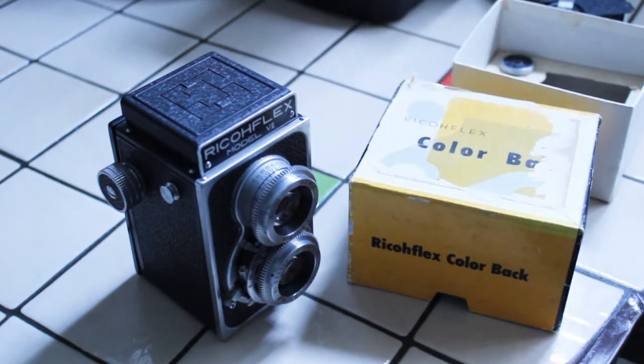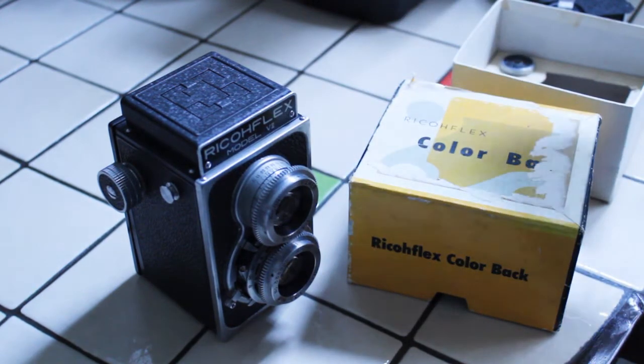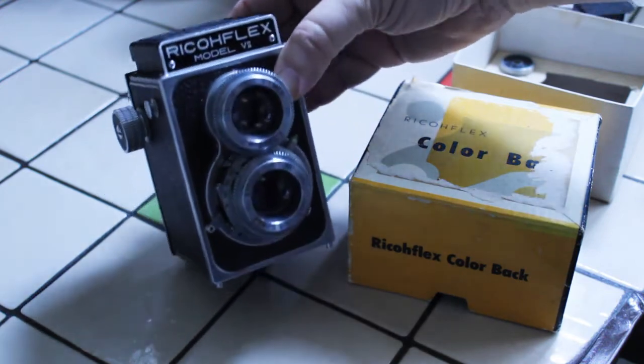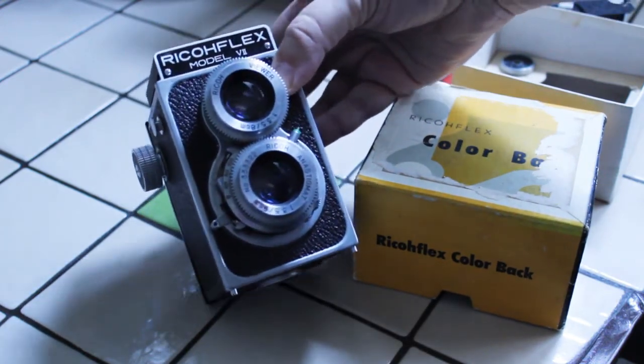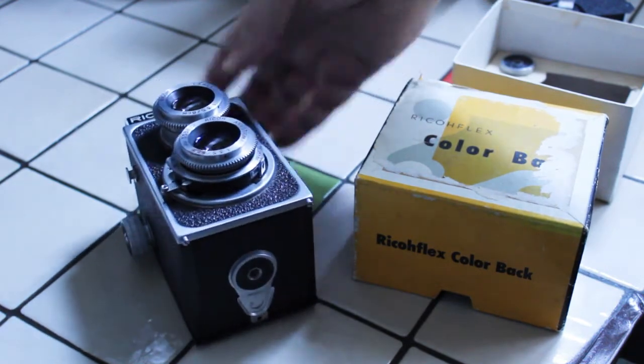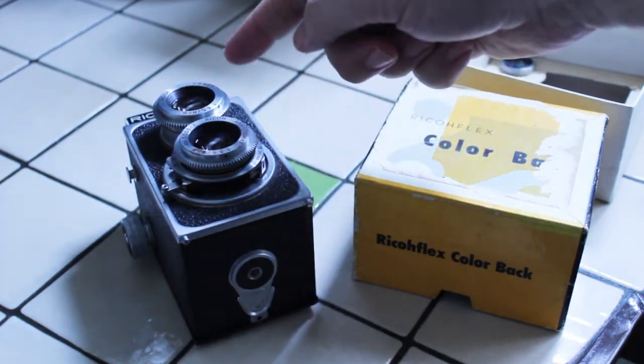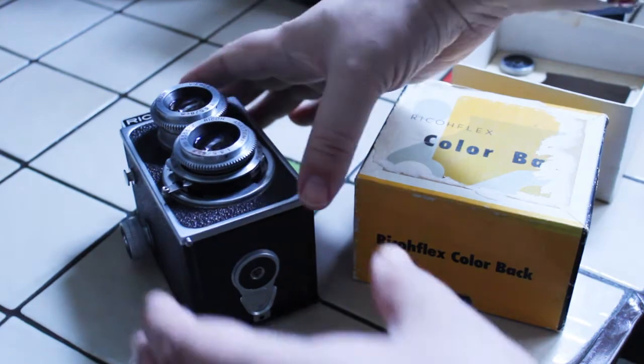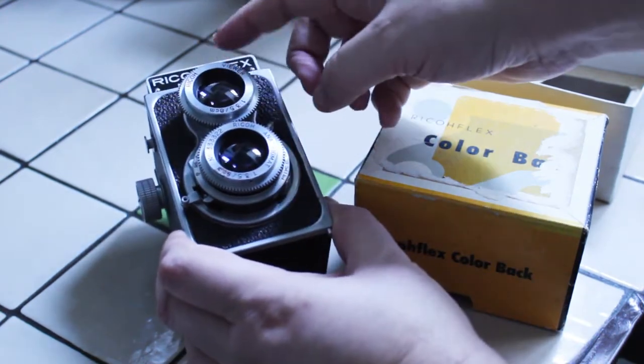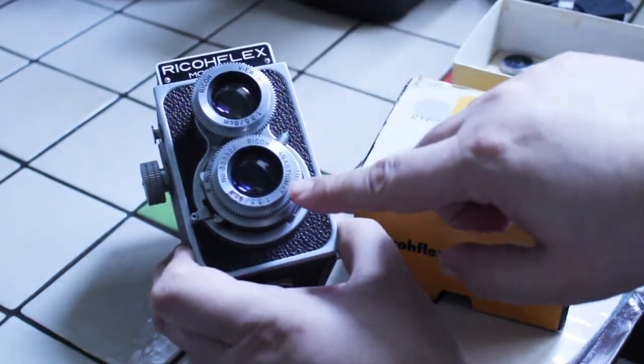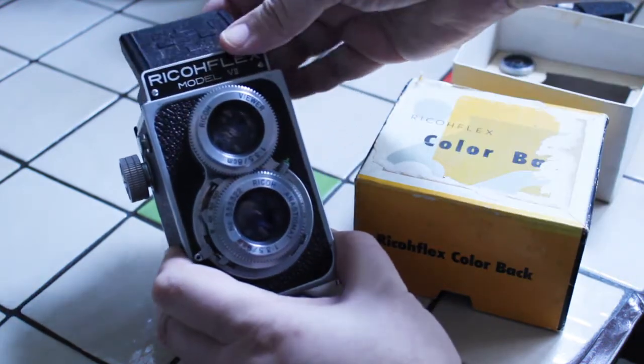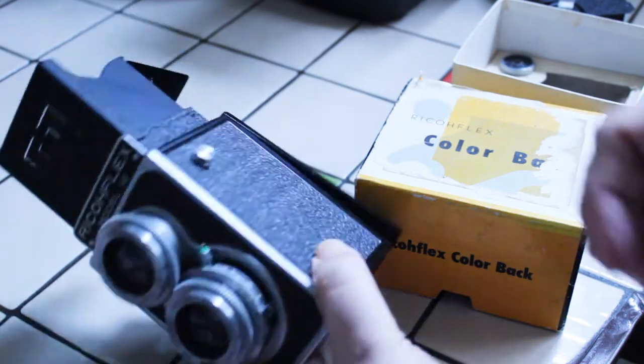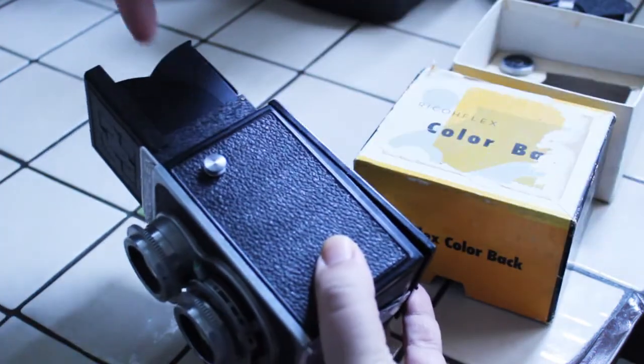Now these are called TLR cameras, or twin lens reflex cameras, and of course it's very obvious why it's called twin lens reflex, because it has two lenses. And just so you know, the top lens would be the viewing lens, so this would be for simply looking at and framing your picture. And this bottom lens was the lens that actually took the photo.